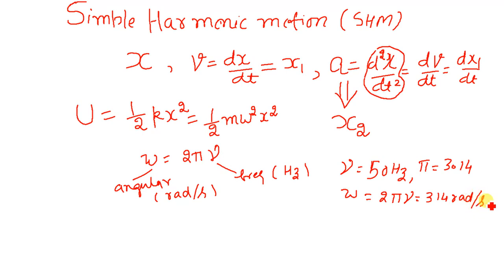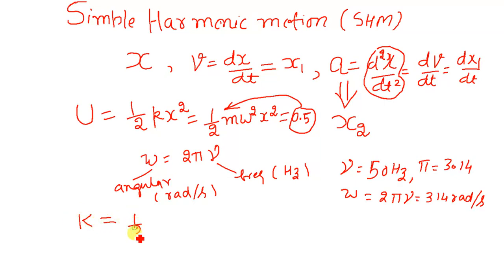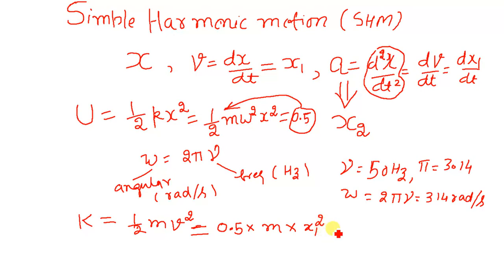I will be using this equation, so instead of ½ I will write it as 0.5 in OpenModelica. Similarly, the kinetic energy is equal to ½mv², but since I have used the symbol x1 for velocity, in OpenModelica I will write it as 0.5 multiplied by mass multiplied by x1 squared. Total energy of the particle executing SHM is the sum of kinetic energy plus potential energy.